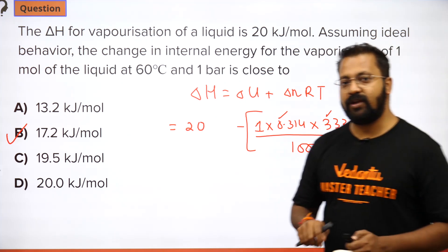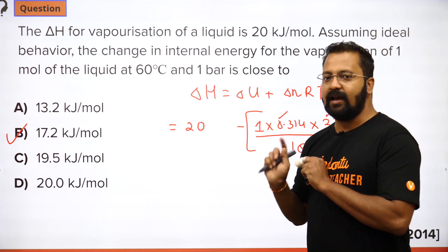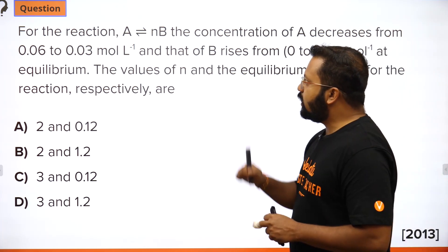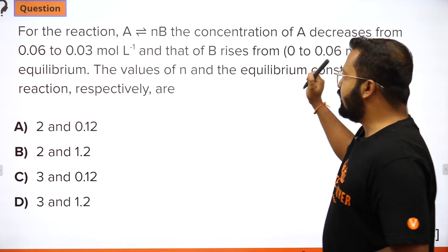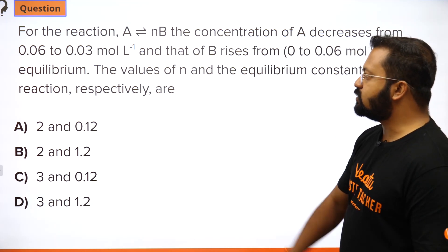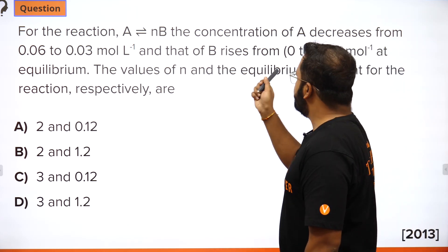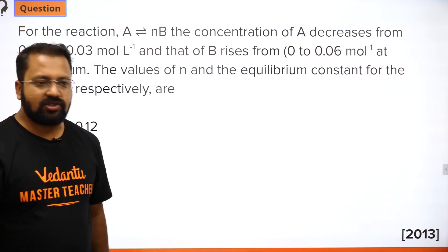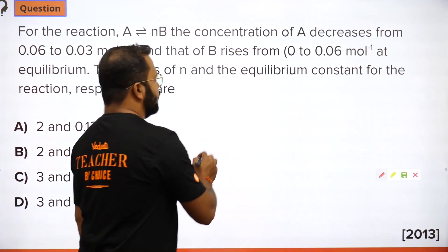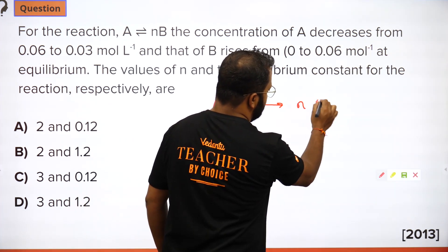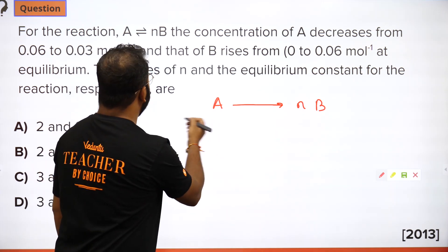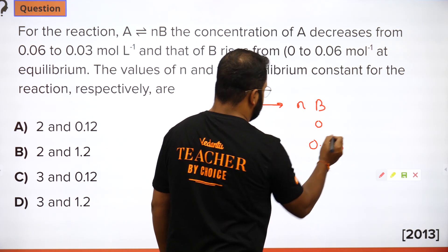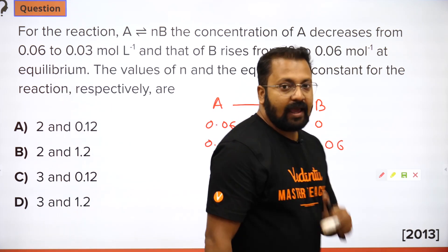Next question: for the reaction A → NB, the concentration of A decreases from 0.06 to 0.03 mol/L, and concentration of B rises from 0 to 0.06 mol/L at equilibrium. We need to find the values of N and the equilibrium constant. Initially [A] = 0.06, at equilibrium [A] = 0.03; initially [B] = 0, at equilibrium [B] = 0.06.